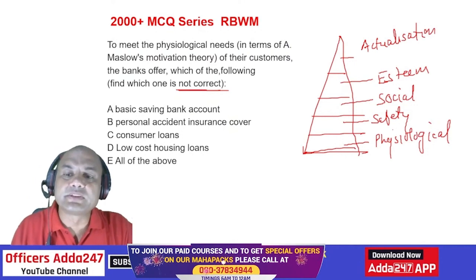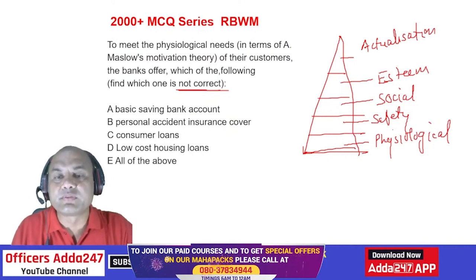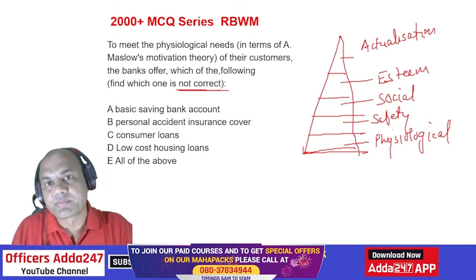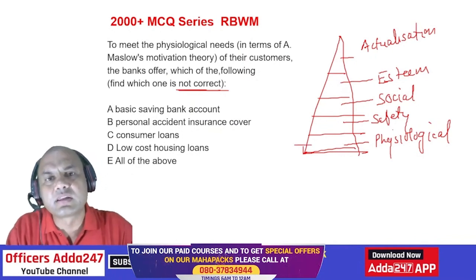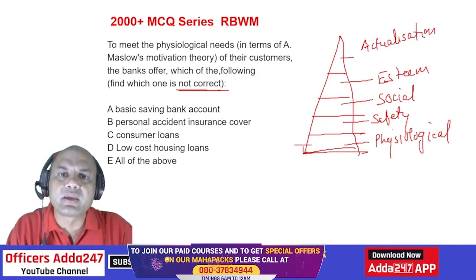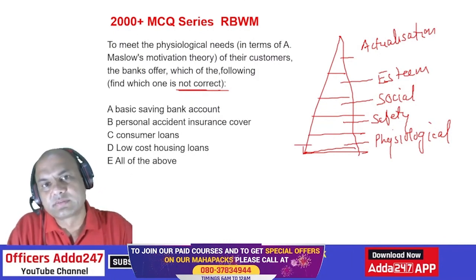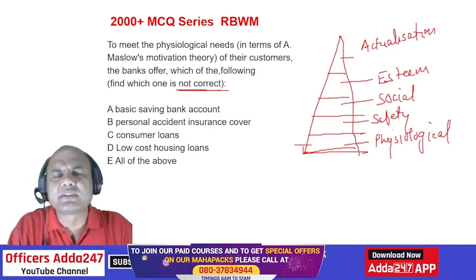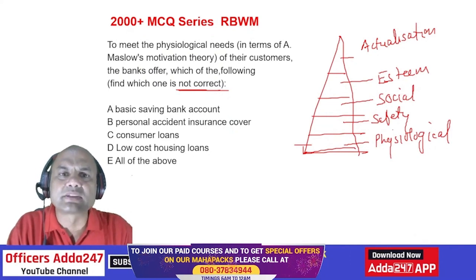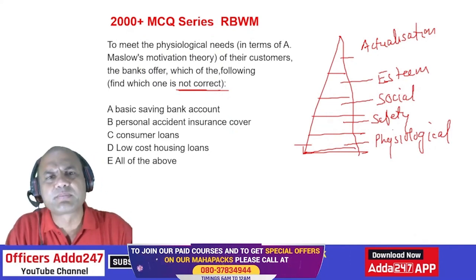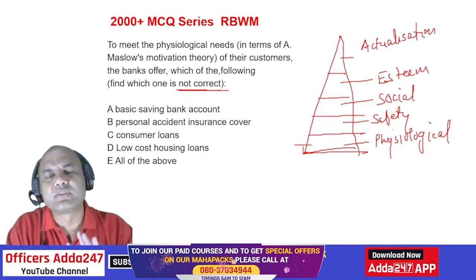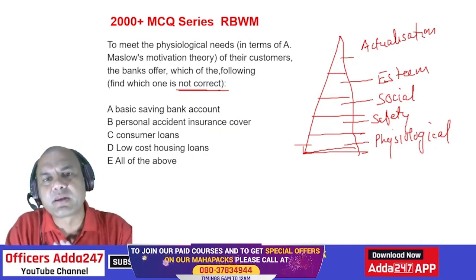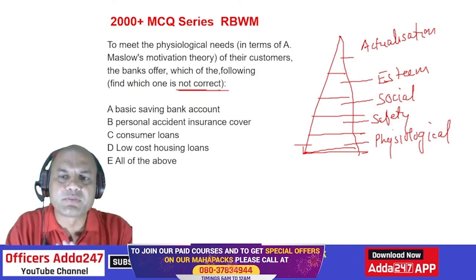Physiological means the person is at the basic level — typically a daily earner. Earn today, eat today. That's it. That person doesn't crave for cars or big bungalows. Daily life is okay — just give me daily bread and butter, that much is enough.